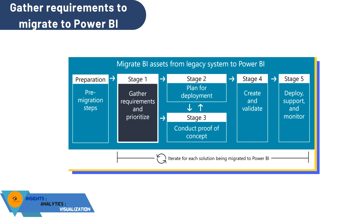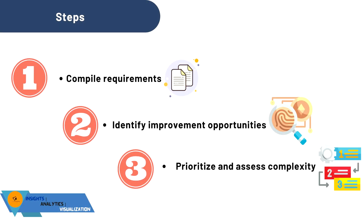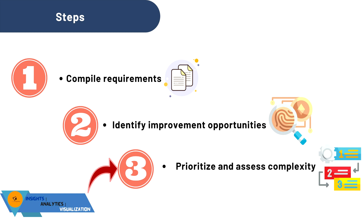We have three different sections as you can see on your screen. The very first is Compile Requirements, which further has two sub-sections. Then we are going to discuss Identify Improvement Opportunities — that means if you can improve your migration process, how you can do that. Lastly, we will discuss Prioritizing and Assessing Complexities.